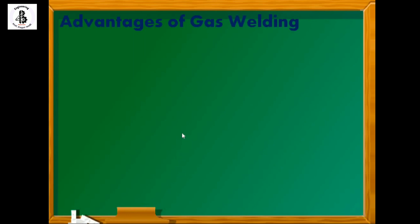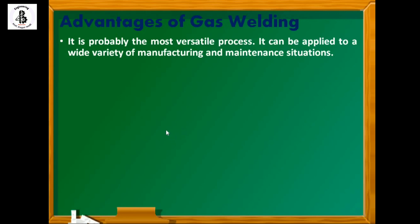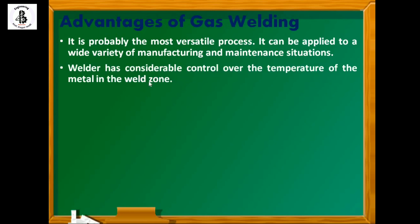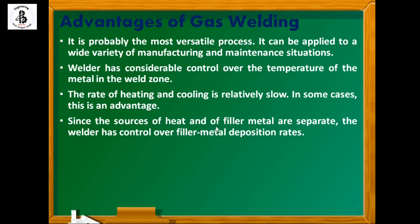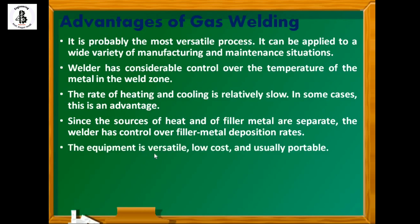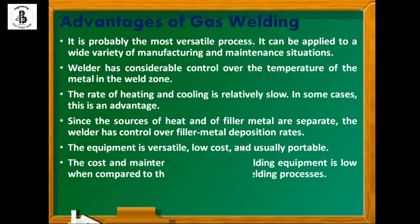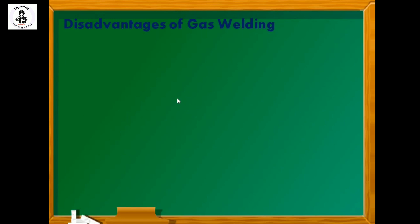Advantages of gas welding: it is probably the most versatile process and can be applied to a wide variety of manufacturing and maintenance situations. The welder has considerable control over the temperature of the metal in the weld zone. The rate of heating and cooling is relatively slow, which is an advantage in some cases. Since the source of heat and filler metal are separated, the welder has control over the filler metal deposition rate. The equipment is versatile, low cost, and usually portable. The cost and maintenance of gas welding equipment is low compared to some other welding processes, and no additional power source is required.